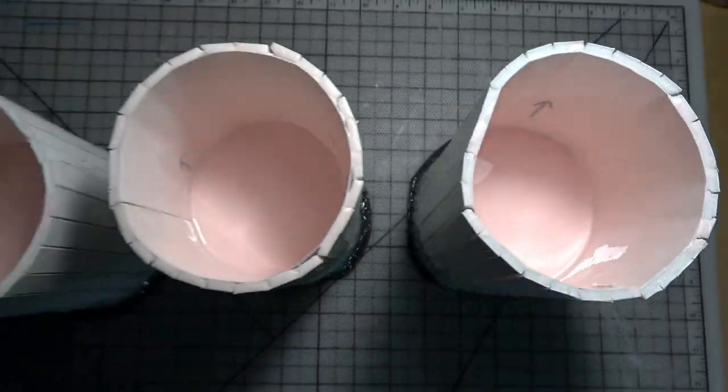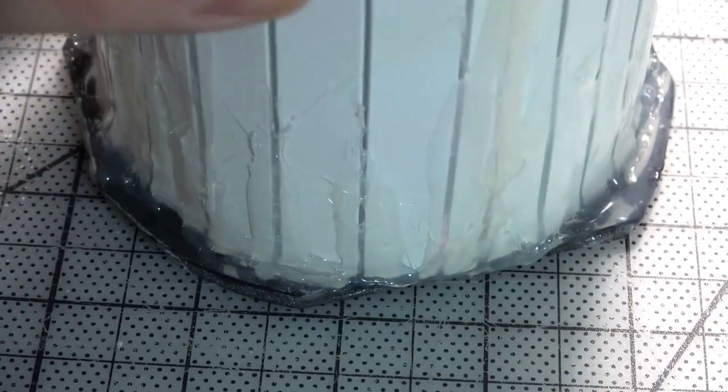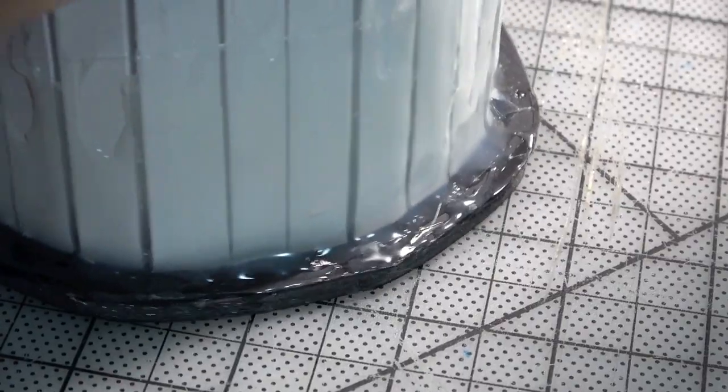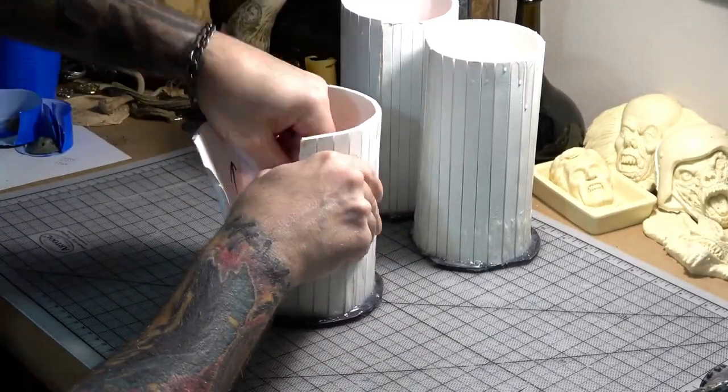For the first hour or so while the silicone is still setting up, I check them often and spin them around to make sure there are no leaks. If there are, just plug them with clay. 24 hours later, it's time to open the molds.